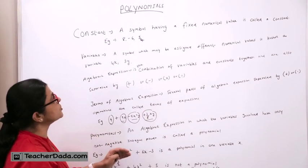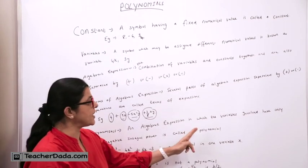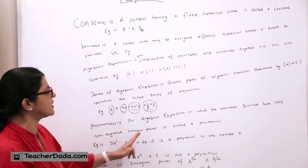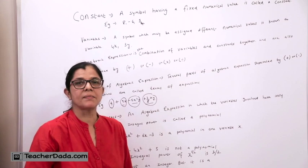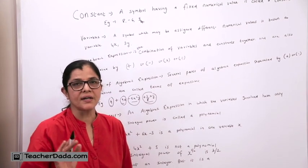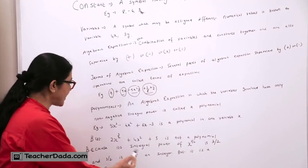Now we come to the actual topic, polynomials. An algebraic expression in which the variables involved have only non-negative integral power is called a polynomial. Now let us understand the meaning of non-negative integral power. I will explain to you with the help of examples.